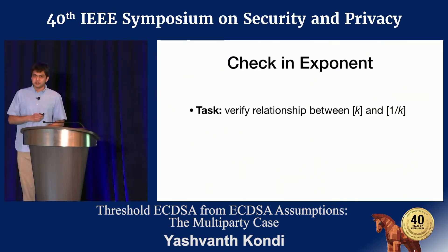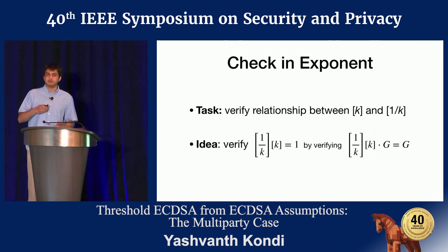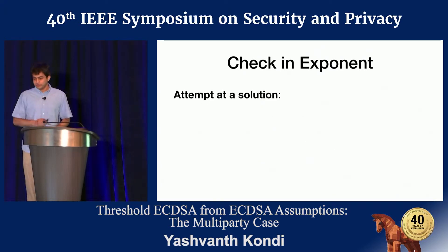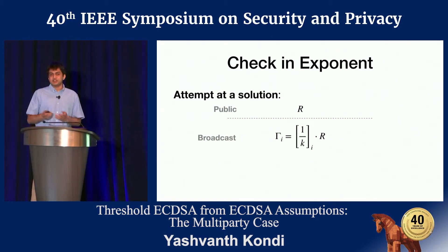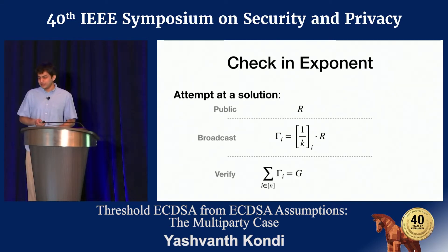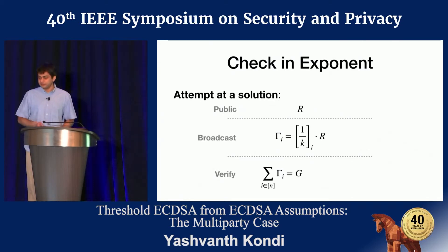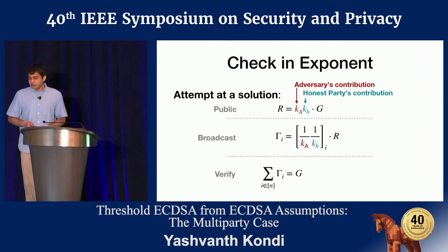Consider the task of verifying the relationship between the sharing of K and its inverse. The idea is to verify that K times K⁻¹ equals 1 by verifying that K times K⁻¹ in the exponent gives back the group generator of the curve. In an attempted solution: we have R, the signing nonce, visible to the world. We instruct each party to multiply R by its local share of 1/K and broadcast this value — call it γᵢ. Then each party verifies that summing the γᵢ values gives back the group generator. This verifies K times K⁻¹ equals 1 — but this doesn't work immediately.